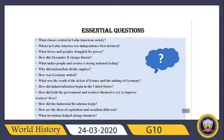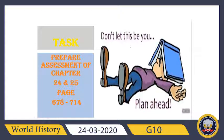How was Germany united — you should know the whole process and any movements involved. What was the result of the defeat of France and the uniting of Germany? How did industrialization begin in the United States? How did both the government and workers try to improve workers' lives? How did the Industrial Revolution begin? How are the ideas of capitalism and socialism different? What invention helped change business? Your final task for today is to prepare the assessment of chapters 24 and 25, found on pages 678 to 700. Read the main things from your chapters, mark or highlight them, and then try to answer all those questions. Take care of yourself — see you again.